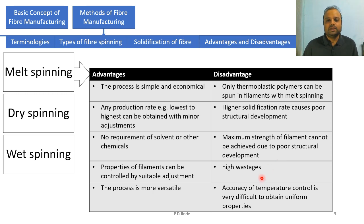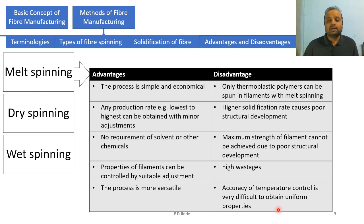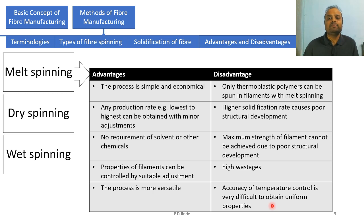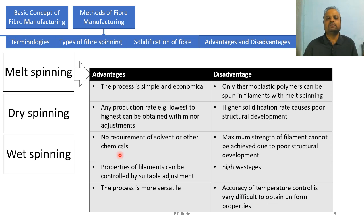Next disadvantage is high wastage, as high-speed machines produce the highest waste. The last disadvantage is that accuracy of temperature is very difficult to maintain. Fluctuations in temperature cause fluctuations in melting, which does not produce a uniform filament, resulting in batch-to-batch variation. These are the advantages and disadvantages of the melt spinning process.